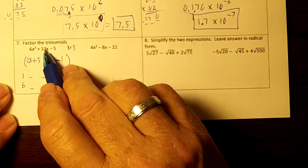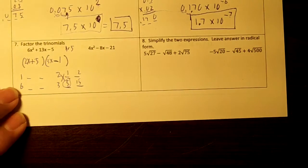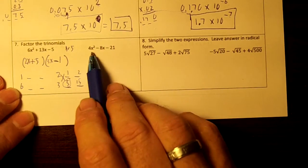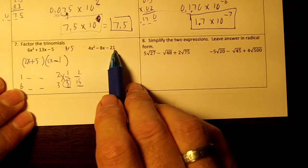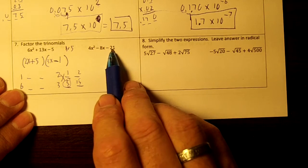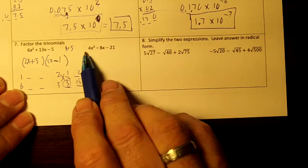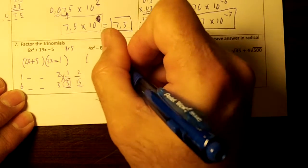So if you multiply this, you'll get the 6x squared plus 13x minus 5. Okay, on this one right here, can we factor out a term? We cannot. The only factors of 21 are 3 and 7 and they don't go into 4 or 8. So draw your two sets of parentheses.